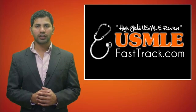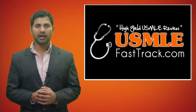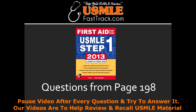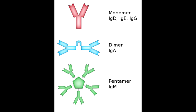Welcome to USMLEFastTrack.com. The section we're going to talk about today is from First Aid for the USMLE Step 1, 2013 edition, page 198: Immunoglobulin Isotypes.